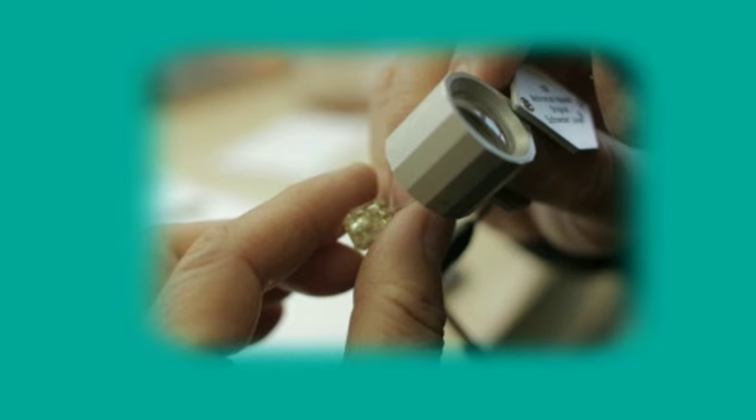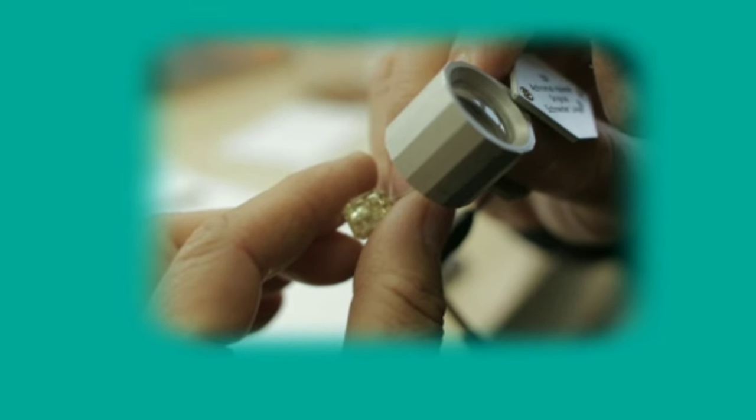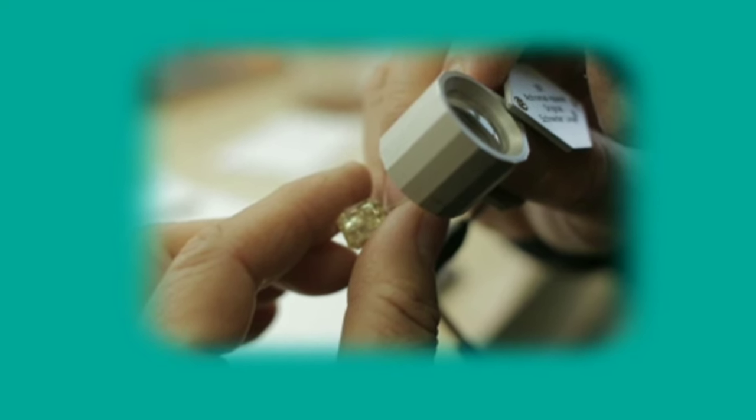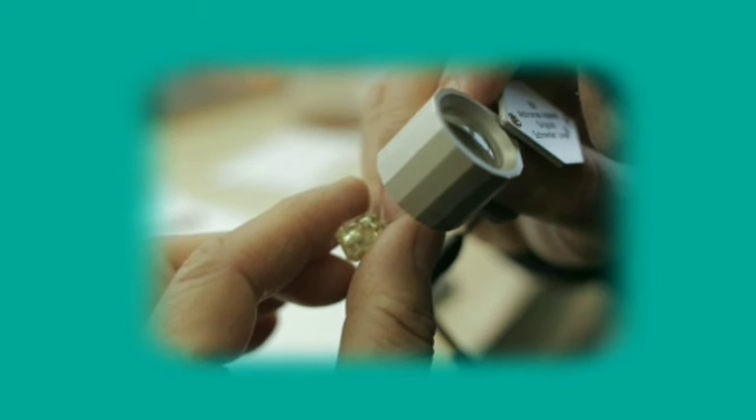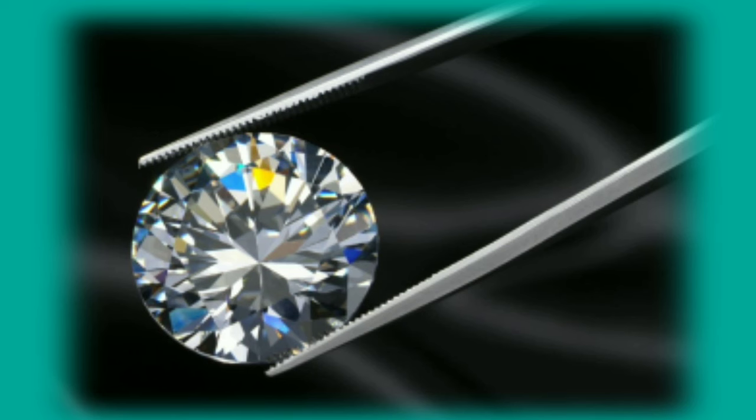UV light test. If you have been researching certification and diamond quality, you may have heard the term fluorescence. This describes the phenomenon of a diamond emitting a blue glow when viewed under UV light. This glow can range from faint to very strong. However, not all diamonds possess this quality, so an absence of this blue glow does not necessarily indicate that the diamond is a fake. It's a fun test, but not the most conclusive.